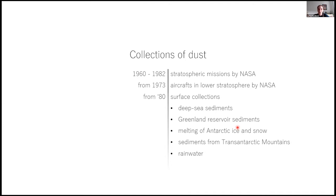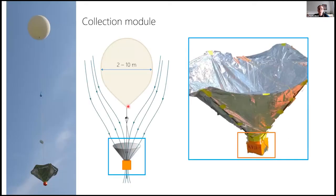But they have a huge budget and very different conditions than we do. Our collection module looks something like this, where the orange box is the module itself. Above it is a funnel which is made from emergency foil, and the box is just below it.